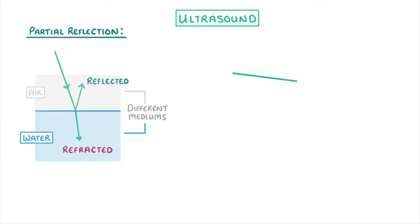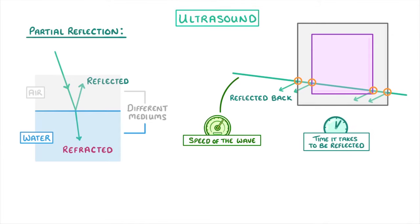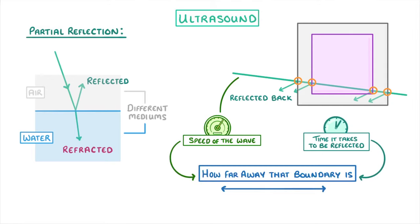This means that if we fire ultrasound waves at an object, the waves will travel through the object, but every time it hits a boundary, some of the waves will be reflected back to us. This means that if we know the speed of the sound wave and the time it takes to be reflected, we can work out how far away that boundary is.